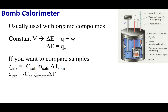Now let's talk about bomb calorimeters. These are usually used with organic compounds — fuel scientists and the nutrition industry use them a lot. In a bomb calorimeter, I have constant volume because I do my reaction in a sealed container. I put the material into a metal container that conducts heat very well, dunk it into a bath of water, and start my reaction. Most of the time this is a combustion reaction, ignited with a spark in the presence of oxygen. The heat comes out of the metal container into the water of the calorimeter.